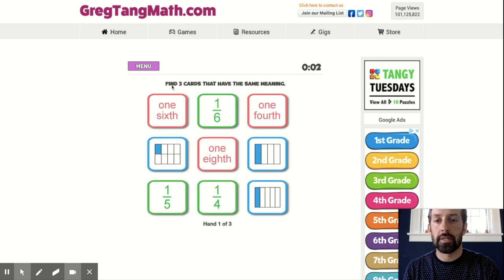Now the directions say find three cards that have the same meaning. You'll notice the cards that are pink are the words to describe the fractions like one sixth, one eighth, or one fourth. The green cards have the written fractions with the numerator and the denominator. And the blue cards are the picture representations of those fractions.